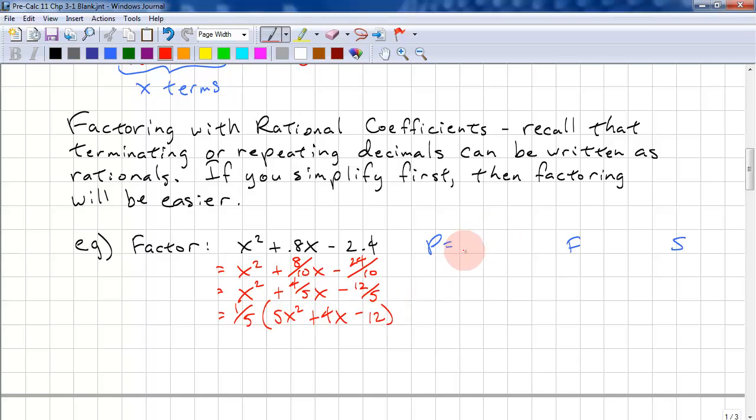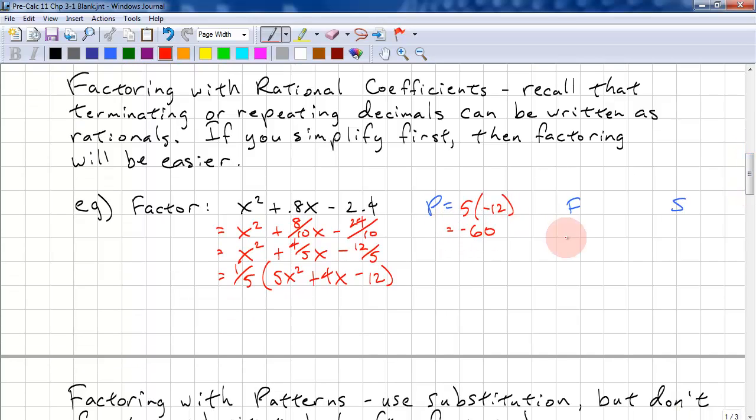P is A times C. That's -60. Our B is positive, so that must mean our larger number must be positive. If we have 60 and -1, that's a sum of 59, very far away from 4. So, we should skip a few values. 15 is a factor of 60, -4, sum is 11. Next, we have 12 and -5, that's 7. Next, we have 10 and -6, and that's 4. That's exactly what we want.